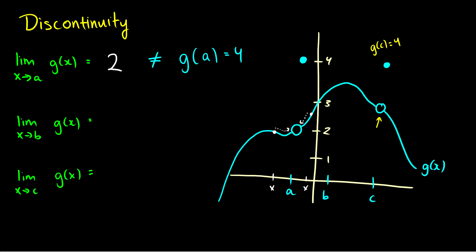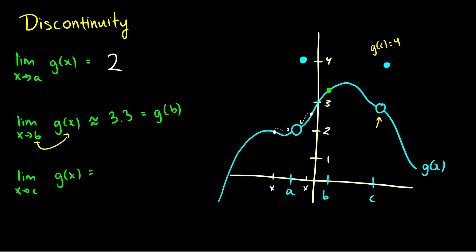This is a really important notion: the graph is not continuous because the limit is somewhere other than where the point is defined. This is important to note when doing piecewise functions or graphical limits. For the limit as x approaches b of g(x), b is continuous with no gap. Approaching from the left and right gives roughly 3.3, so the limit is approximately 3.3. Because it's continuous, we can say the limit equals g(b).